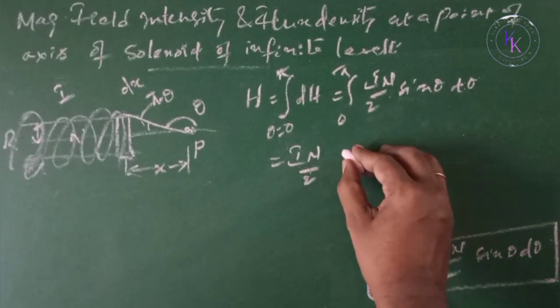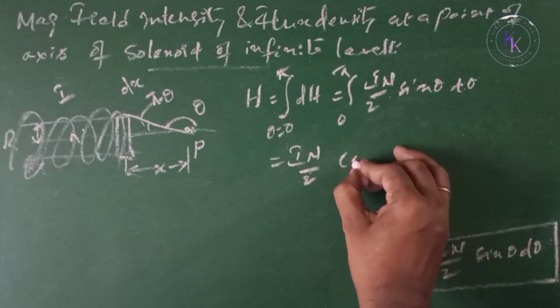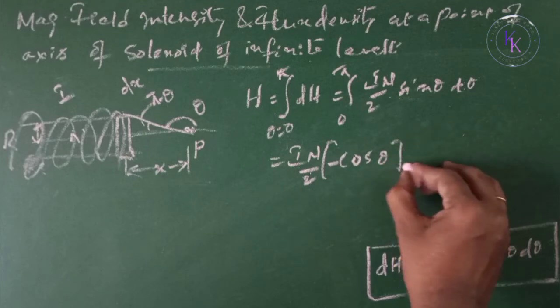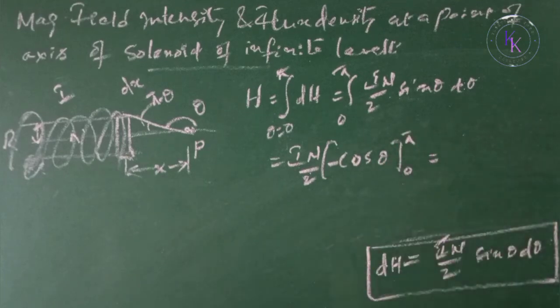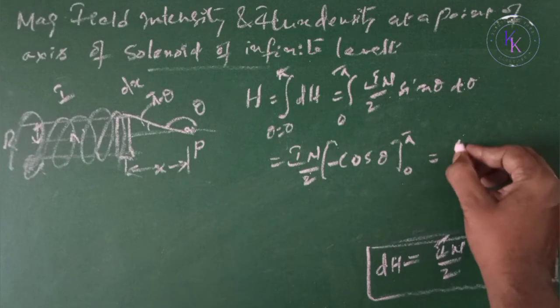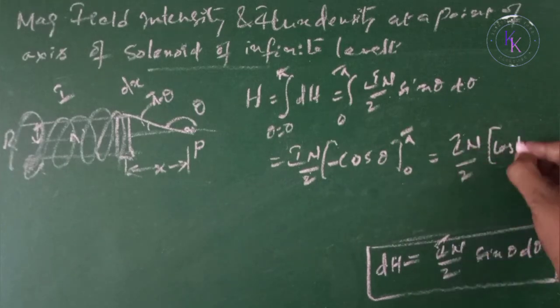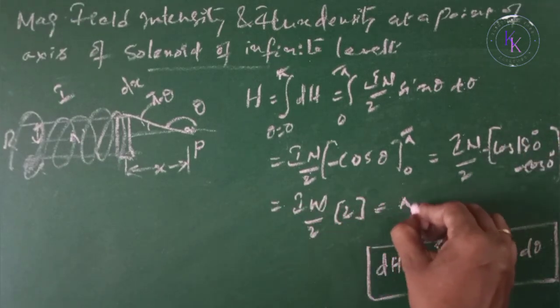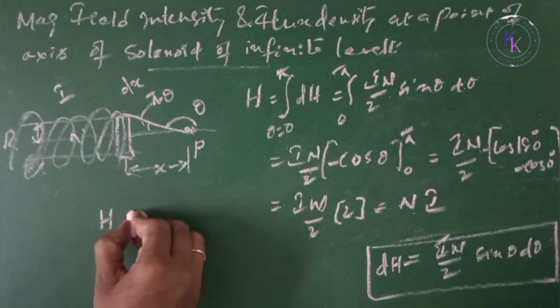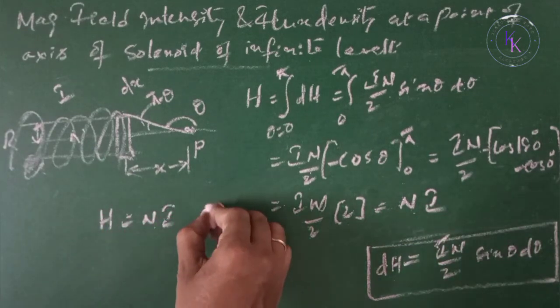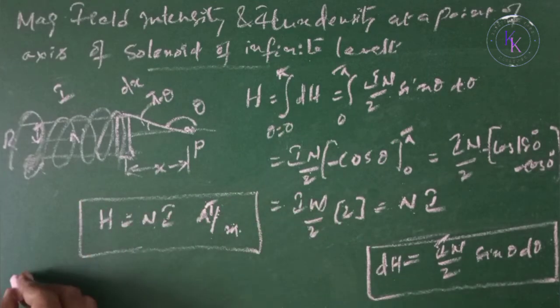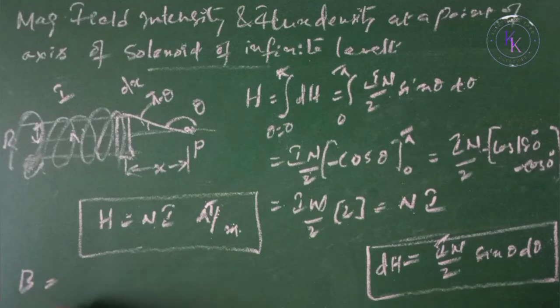Then I N by 2, integral of sin theta is negative cos theta, given the limit 0 to pi. If you substitute this, you are going to get I N. Therefore H equals to N I ampere turns per meter, field intensity.